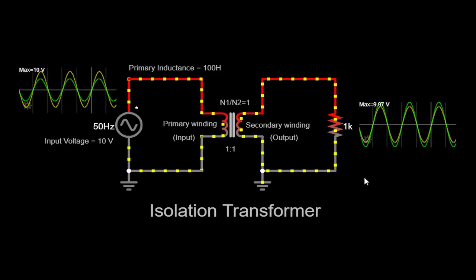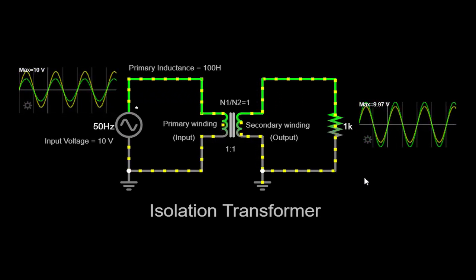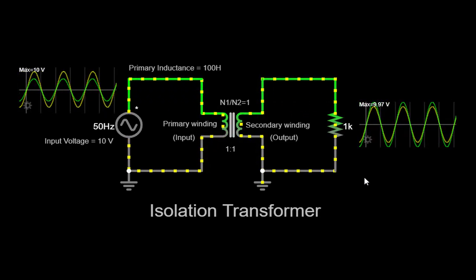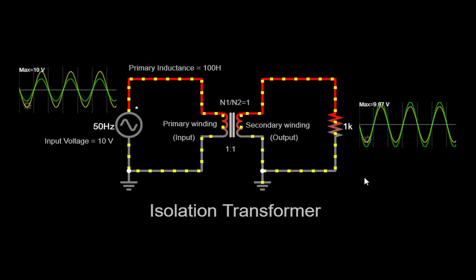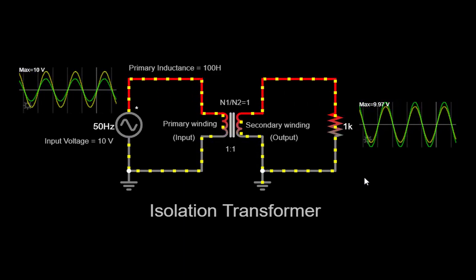We discussed the importance of electrical isolation, the role of primary inductance, turns ratio, and coupling coefficient in the transformer's operation. By using an isolation transformer, we create a safe and stable electrical environment.